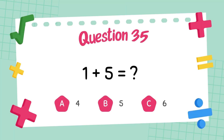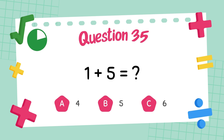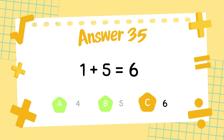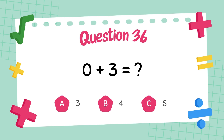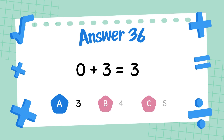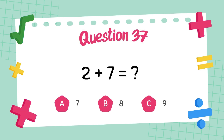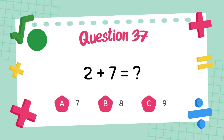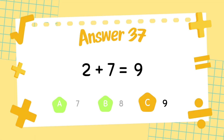What is 1 plus 5? The answer is 6. What is 0 plus 3? The answer is 3. What is 2 plus 7? The answer is 9.